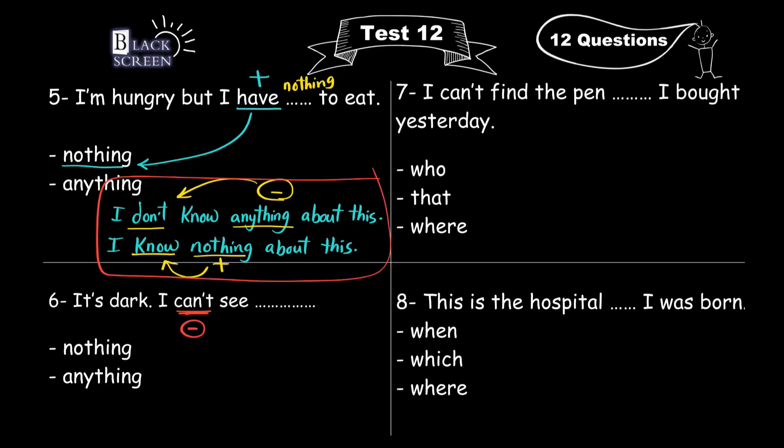I can't find the pen, blank, I bought yesterday. Who, that, where. We use who after a person, that after a person or a thing, where after a place. The pen is not a person and not a place. The pen is a thing. So we use that. I can't find the pen that I bought yesterday.